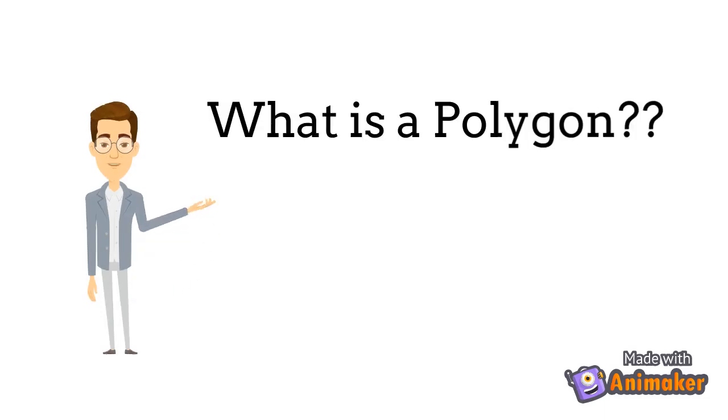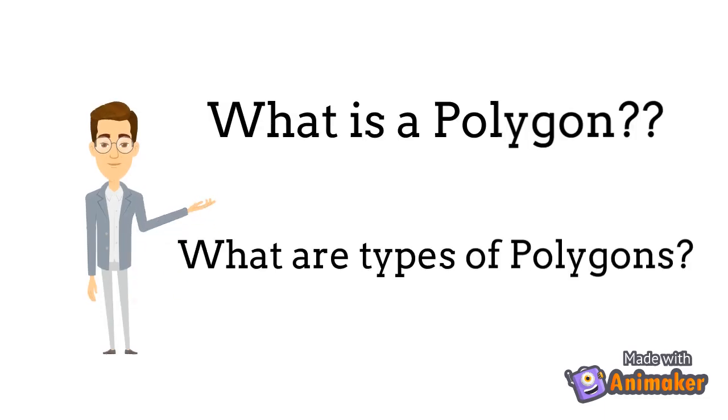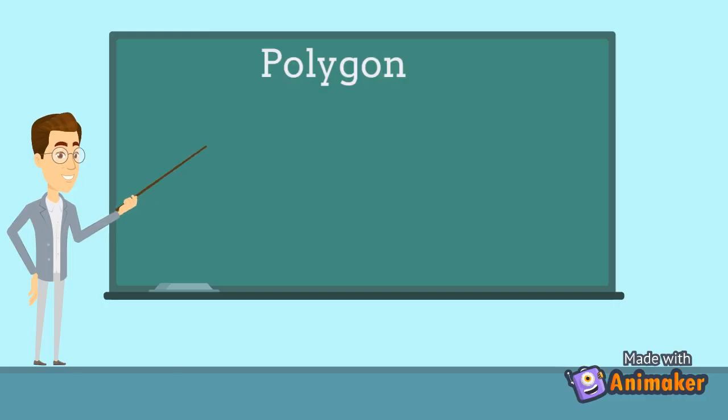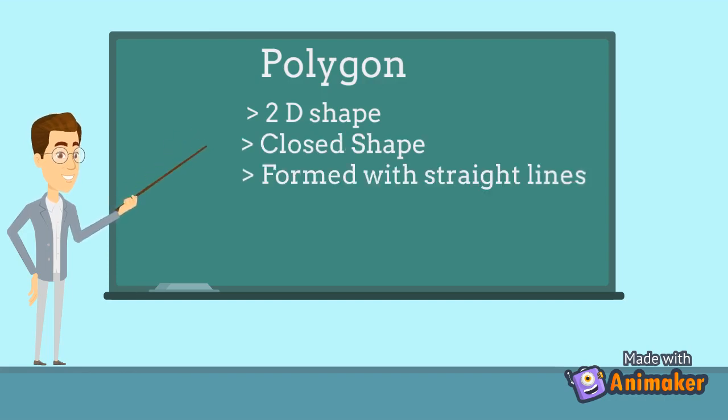In this video we will discuss about polygons and types of polygons. A polygon is any two-dimensional closed shape. It is formed with straight lines and has at least three sides and angles.